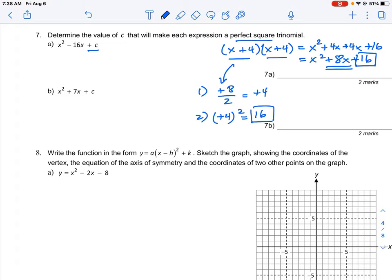So if we apply that rule here to find what value of c that we can use, we take our first step, which is negative 16, we divide that by 2, which gives us negative 8. And then we take our second step, which is negative 8, and we square that, which gives us 64. Therefore, the answer c is equal to 64 is the number that we would need in order to create a perfect square trinomial out of that expression.